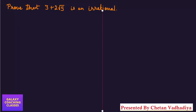Hello friends, my name is Chetan Vadhadya and today we are going to prove that 3 plus 2 root 5 is an irrational number. Let me select the pen.